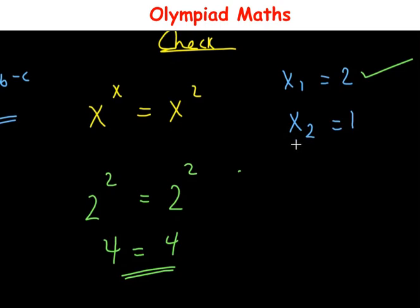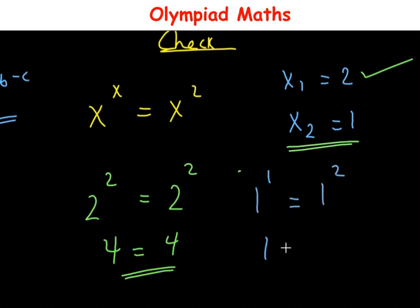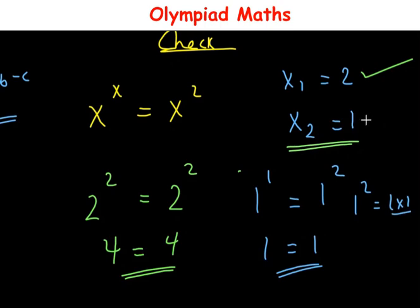For x equals 1: 1 raised to power 1 equals 1 raised to power 2. Now 1 raised to power 1 is 1, and 1 raised to power 2 is 1 times 1 which is also 1. So 1 equals 1, confirming that x equals 1 is also a correct solution.